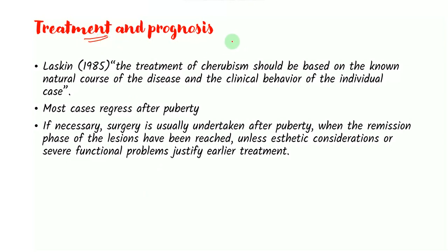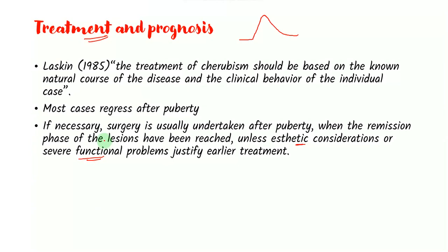Treatment and prognosis. Remember the graph: at birth it is normal, three years it increases, up to five years rapidly increases, and then begins to regress into adulthood. So the same treatment pattern follows. Usually you avoid surgery unless aesthetic considerations are involved and there are severe functional problems. There are other therapies also such as bisphosphonate therapy, but remember this point is particularly very important.